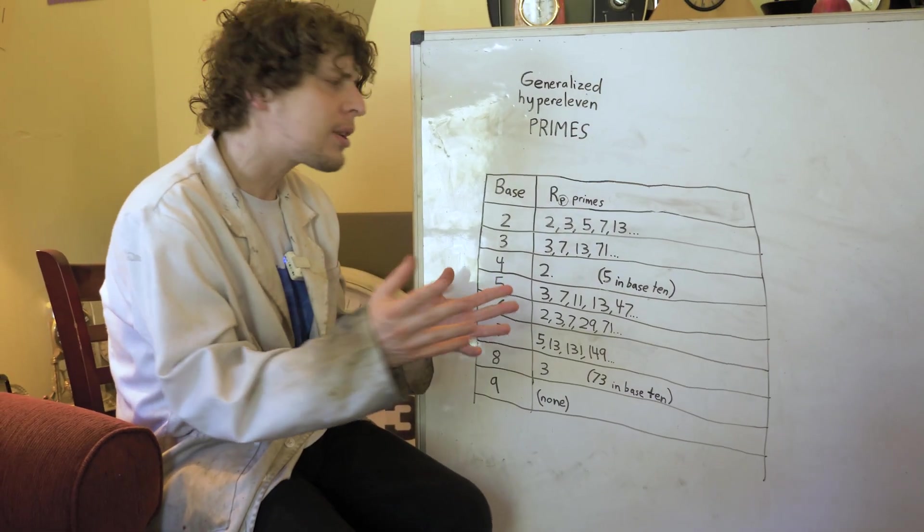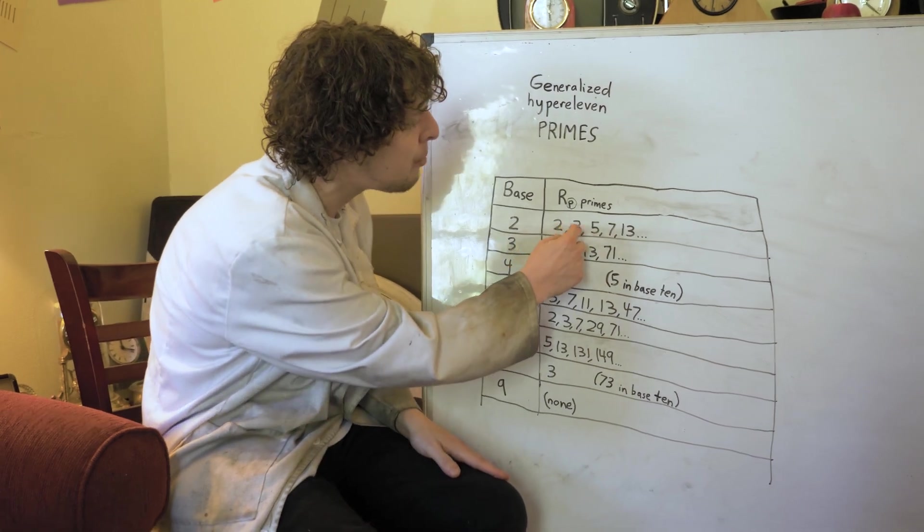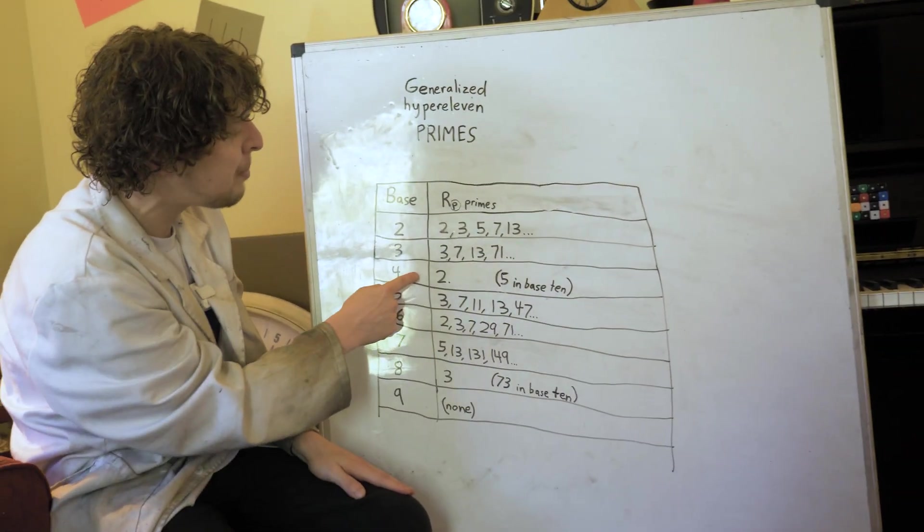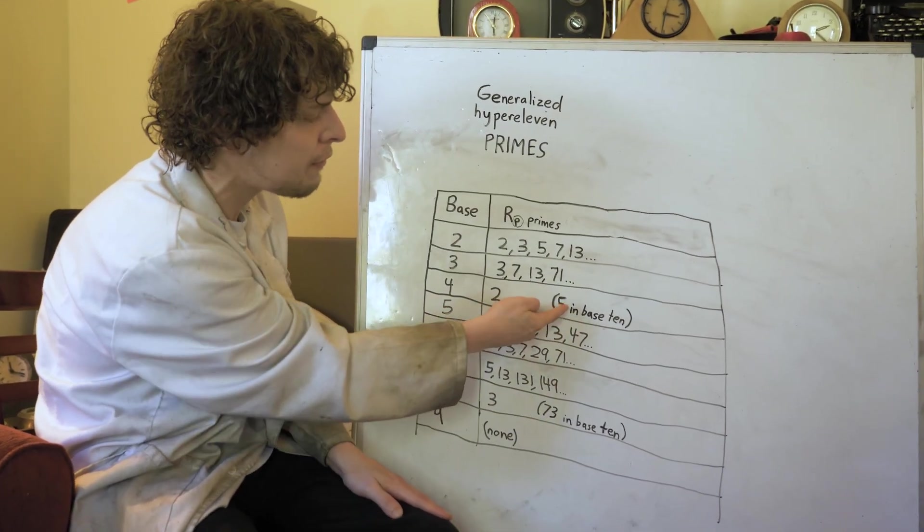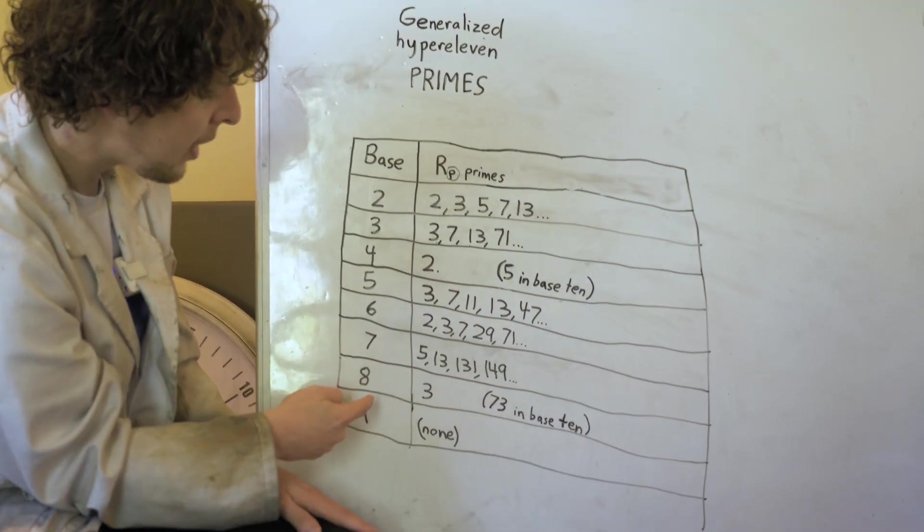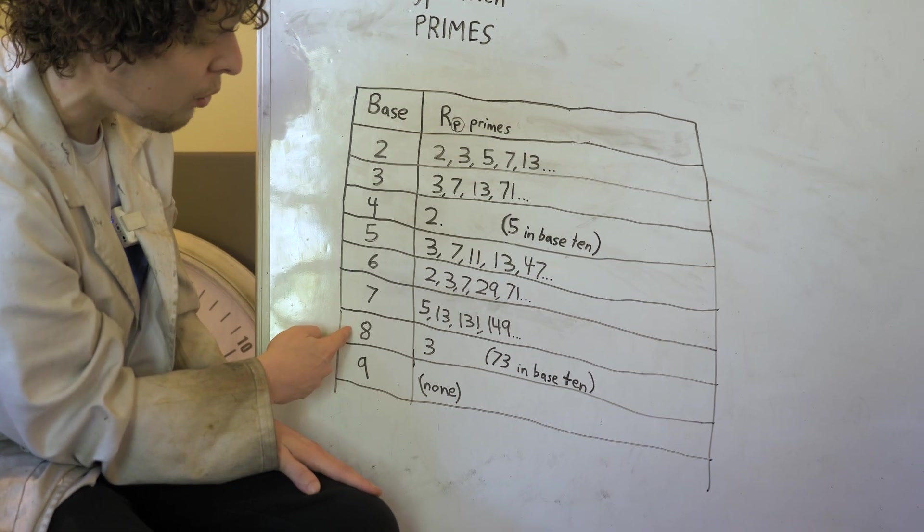Now you may notice that most of them have a bunch of numbers and keep going. Whereas base four only has a single one, two ones, which is five in our system.